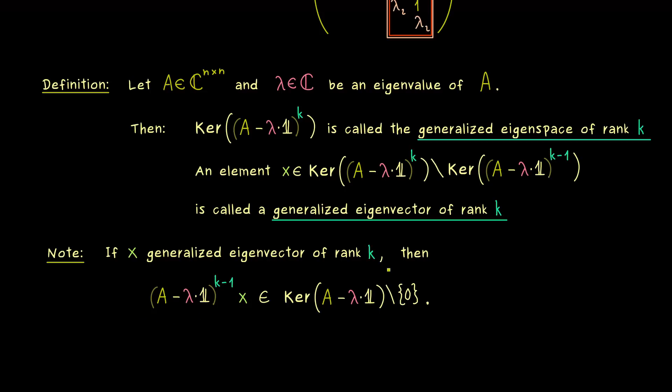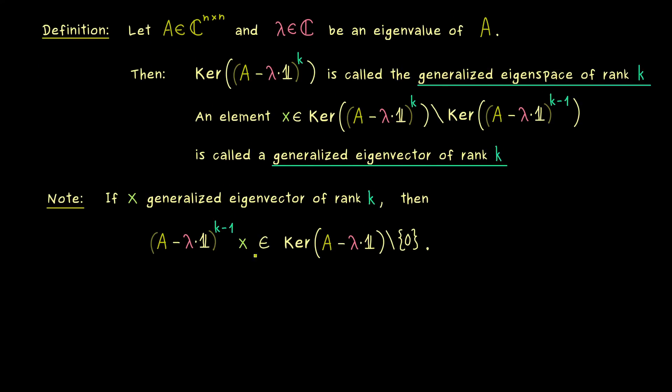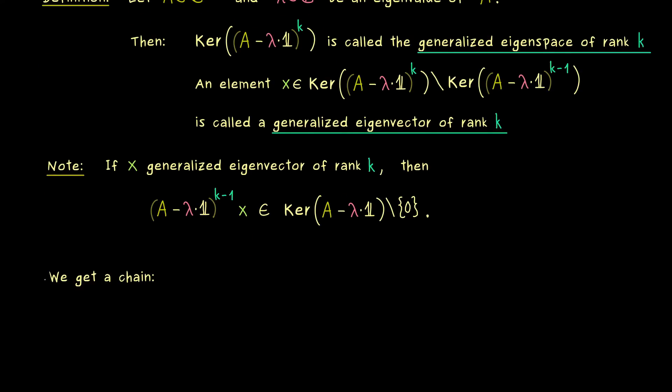Moreover what we get with the generalized eigenspaces is a whole chain of subspaces. In fact the subspaces cannot get smaller if we increase the power. So for example we would say we have the smallest subspace just the zero vector if we have the power zero.